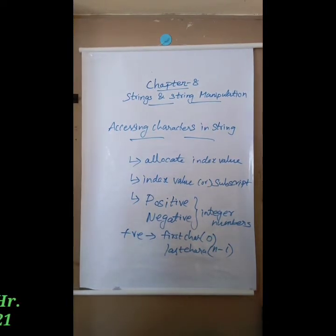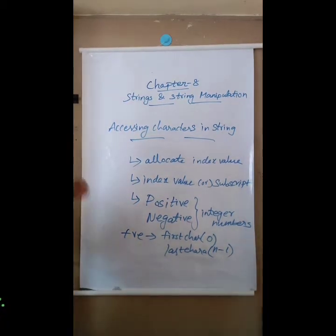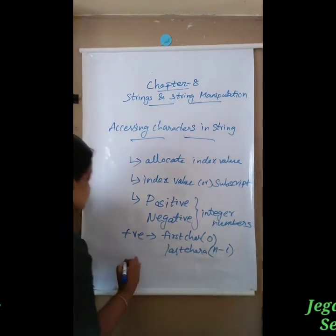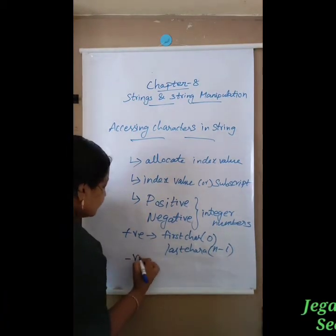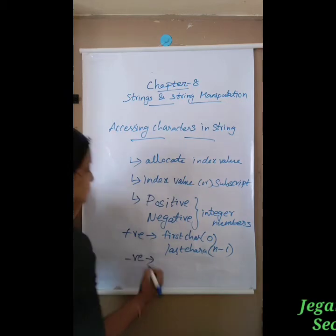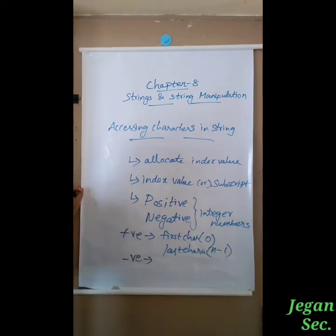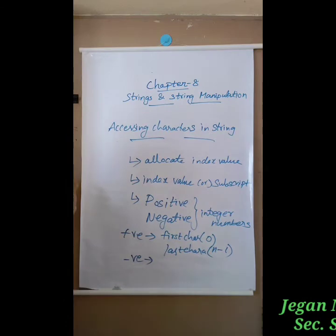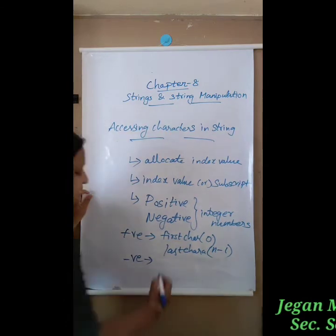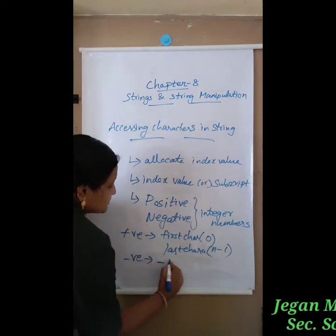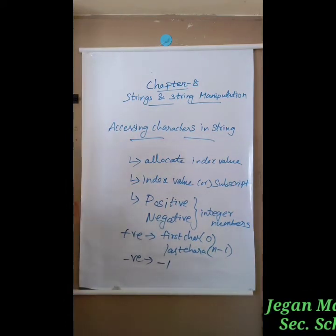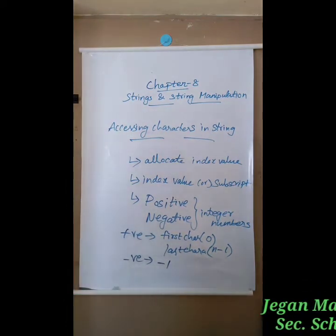For negative subscripts, the index is assigned from the last character to the first character — that is, in reverse order. The last character begins with minus 1.